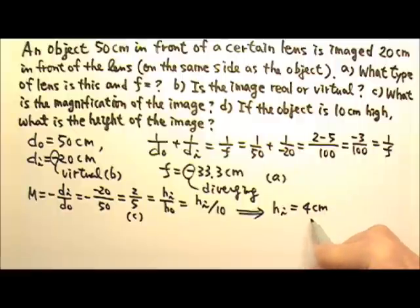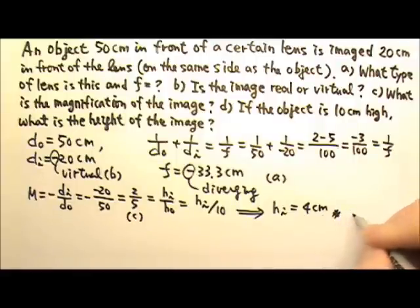And it's positive because it's upright, because it's a virtual image. So this is as we expect it to be positive, and it's 4 cm tall. That's the answer for part D.